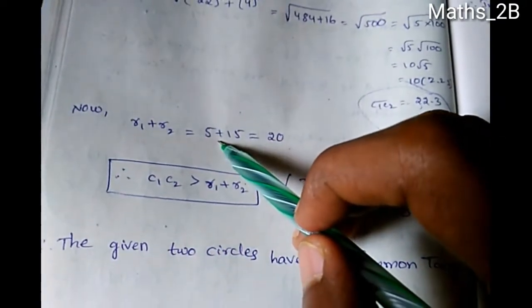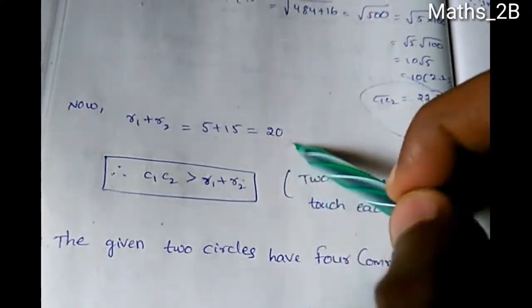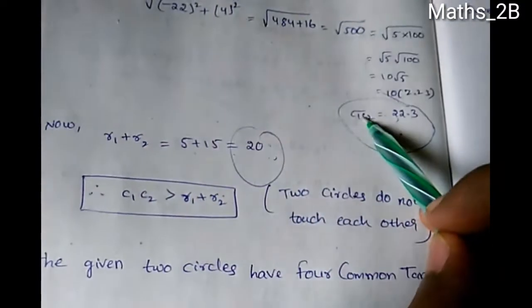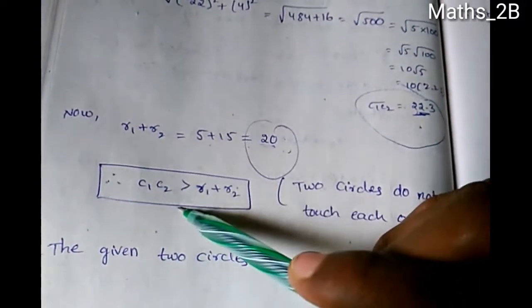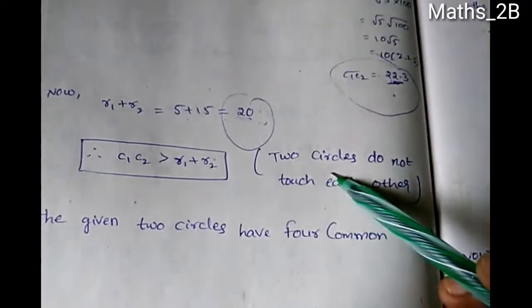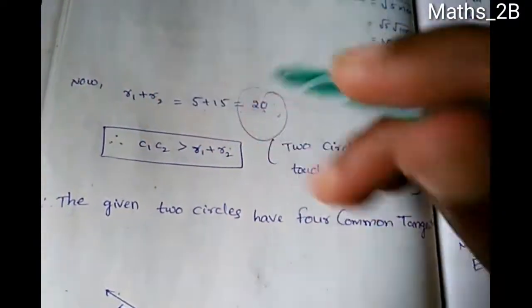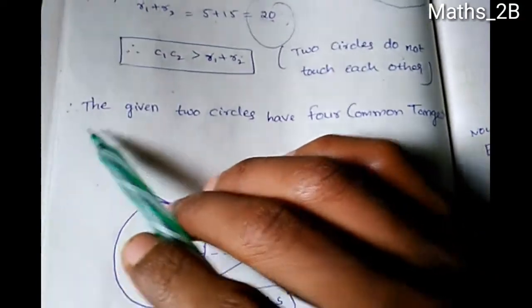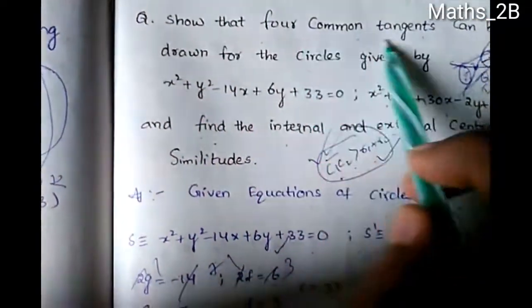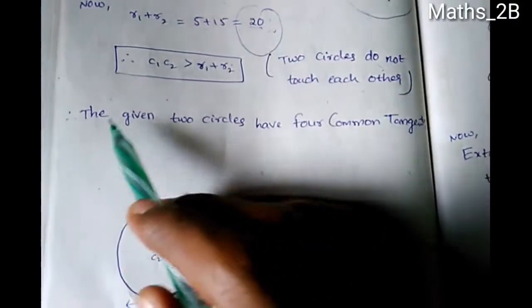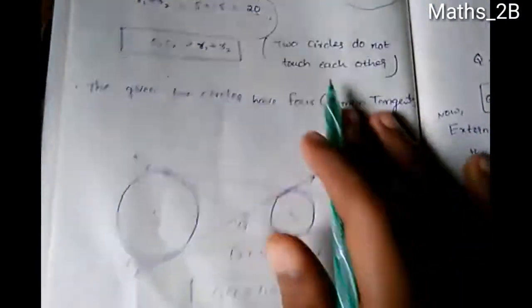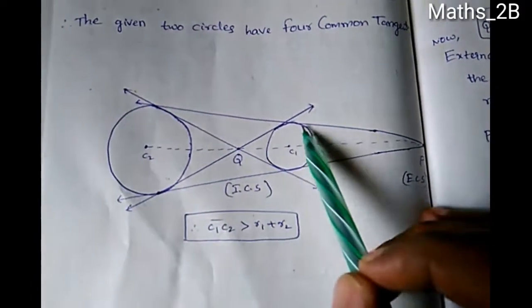Since the distance C1C2 = 22.3 is greater than R1 + R2 = 20, the two circles do not touch each other. Therefore, the given two circles have four common tangents. This proves that four common tangents can be drawn for these two circles.